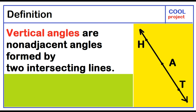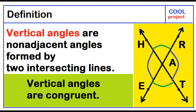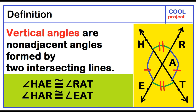Vertical angles are non-adjacent angles formed by two intersecting lines. Angle HAE and angle RAT are vertical angles. Angle HAR and angle EAT are vertical angles. Angle HAE is congruent to angle RAT, and angle HAR is congruent to angle EAT.